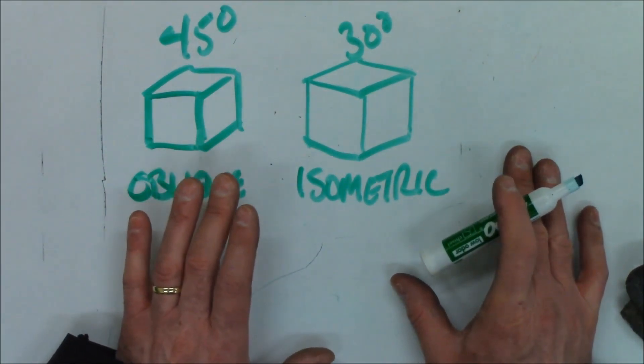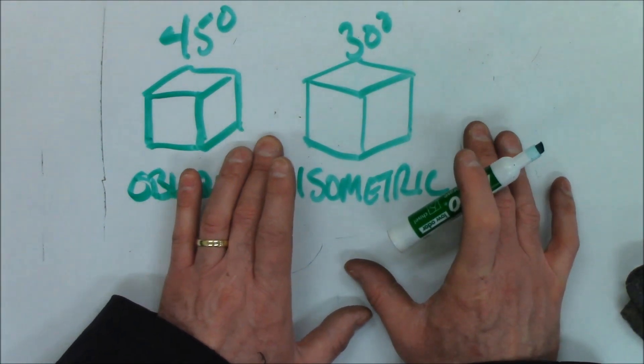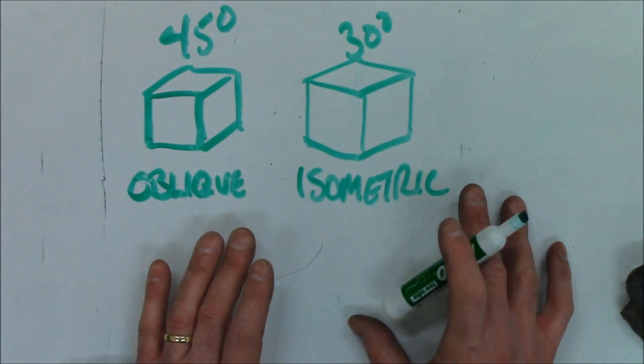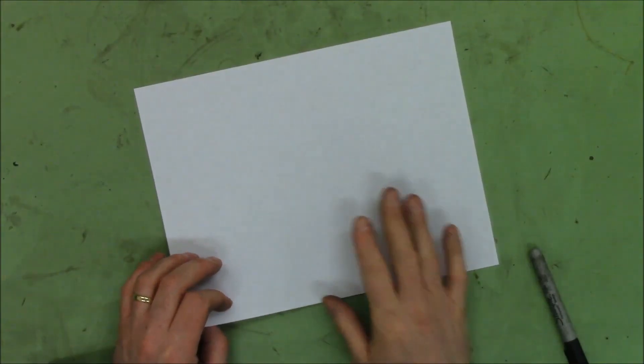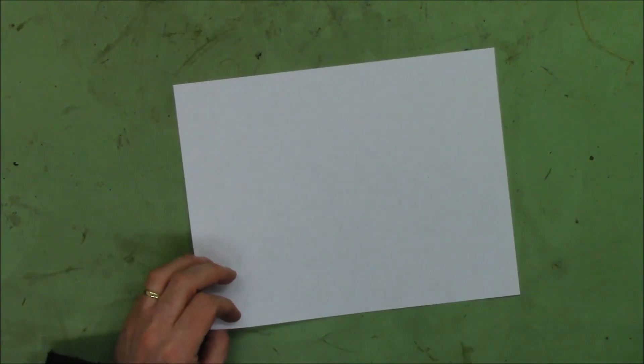The one I'm going to show you today is the easiest to draw, but the hardest to understand. Let's take a look. To make this show up better, I've got to lose my background.